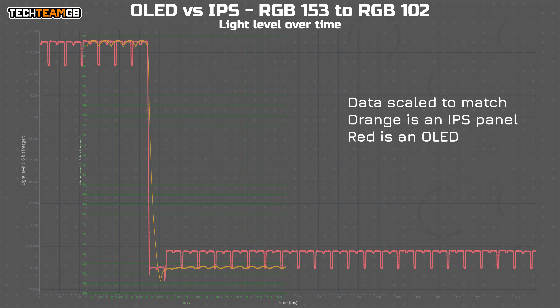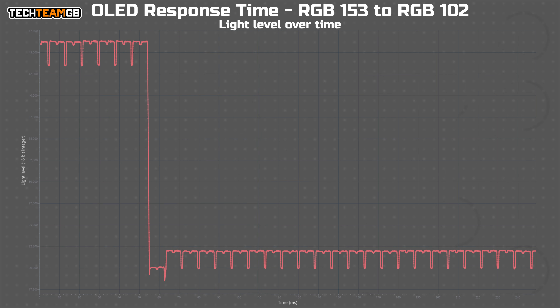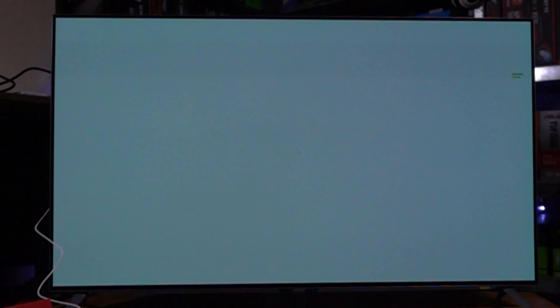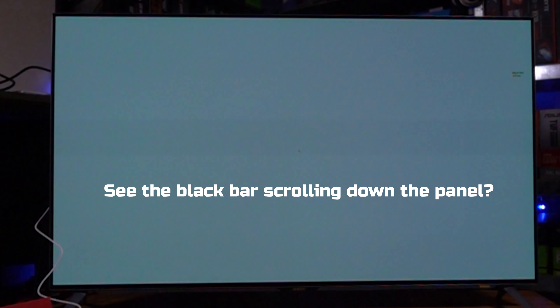OLEDs are a weird one to test for response times. Being an organic light emitting display, the LEDs themselves can change brightness levels and therefore color outputs in nanoseconds if driven hard enough. Realistically it's more like microseconds, but that's still a lot, lot faster than a traditional LCD display that can take milliseconds - literally an order of magnitude longer. Here is an LCD measurement and an OLED measurement overlaid - see the difference? OLEDs are fast.